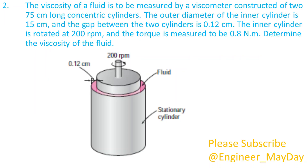Here is a second question. The viscosity of a fluid is to be measured by a viscometer constructed of 275 centimeters long concentric cylinders. The outer diameter of the inner cylinder is 15 centimeters and the gap between the two cylinders is 0.12 centimeters.